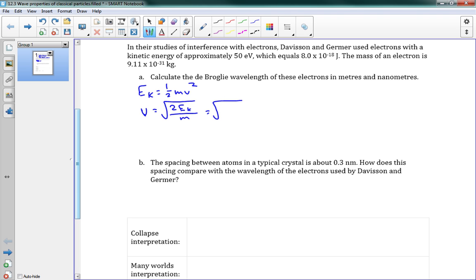So, we've got 2 times 8.0 times 10 to the negative 18 divided by the mass, 9.11 times 10 to the negative 31. And that gives us a speed of 4.19 times 10 to the sixth meters per second.